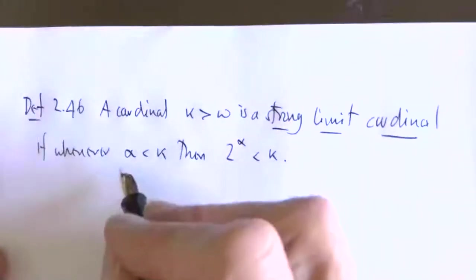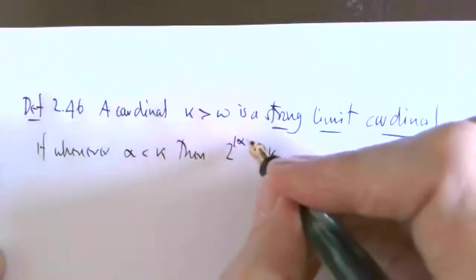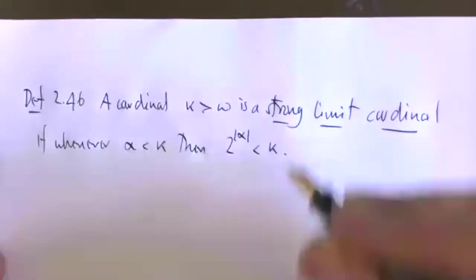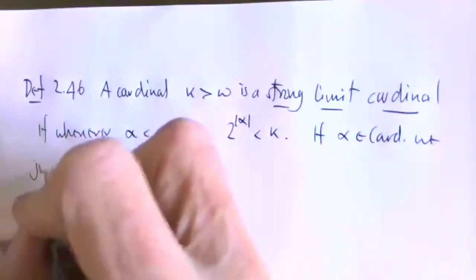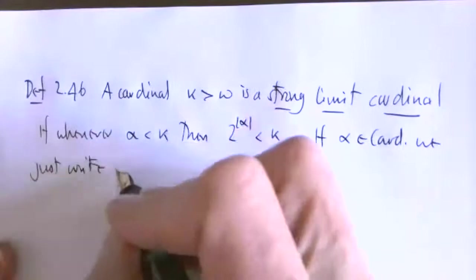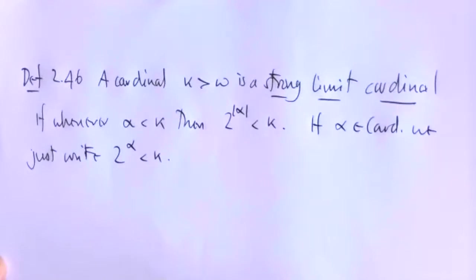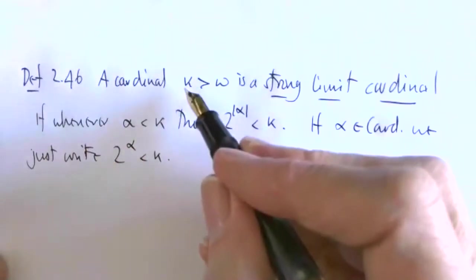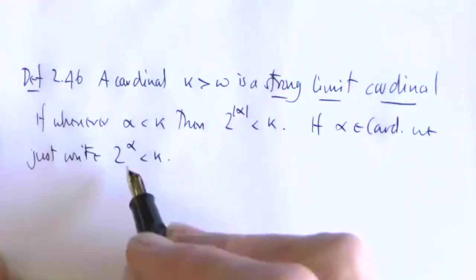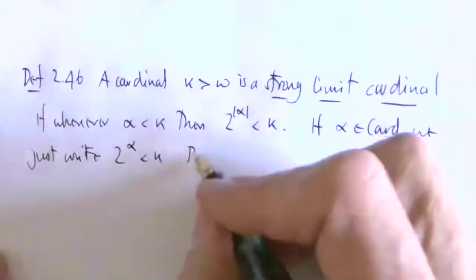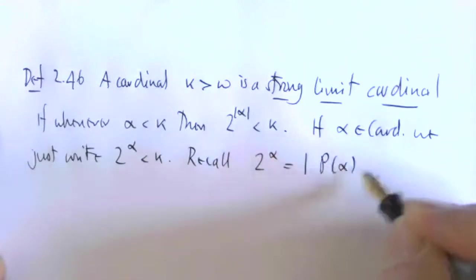More strictly speaking, if alpha is an ordinal rather than a cardinal, we should say 2 to the cardinality of alpha is less than kappa. So the idea is I can't access kappa by finding a smaller cardinal whose power set is larger.